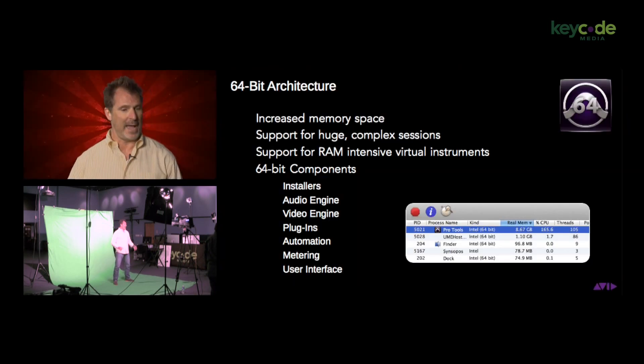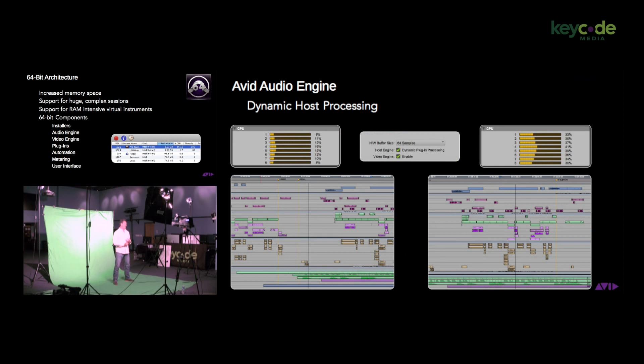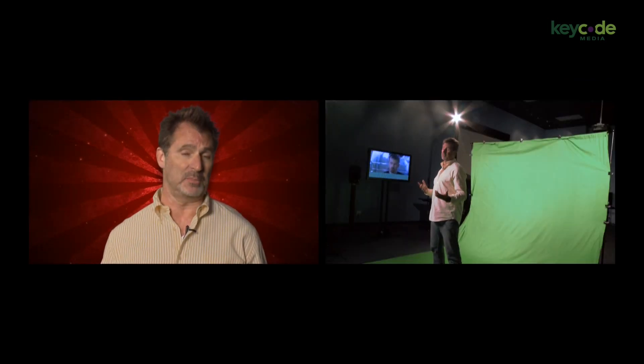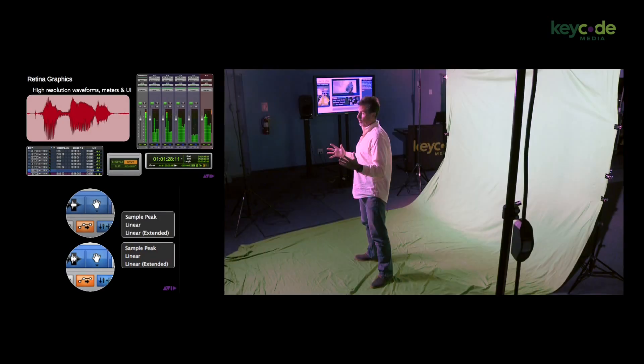Being a 64-bit application, Pro Tools 11 actually takes the lid off all the limitations of what a 32-bit application had. You can access as much RAM as your computer has, and you can access all the processes over your CPU. You've got tons and tons of power — literally a quantum leap more powerful than what you've been used to. The resolution of the graphics is now retina-level display, so everything is much crisper and graphically cleaner.